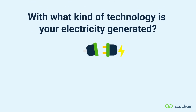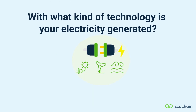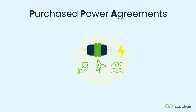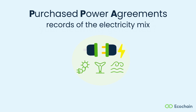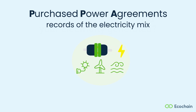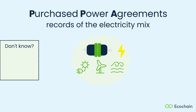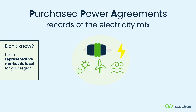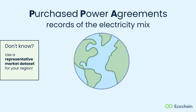Firstly, you need to determine whether you know what kind of electricity you are using. If you have information on the source of your electricity, such as purchase power agreements (PPAs) or records of the electricity mix, you can model your electricity accordingly. If you don't know the source, you can use a representative market dataset for your region. The database has extensive coverage of regions, including different provinces for large countries like India and China.